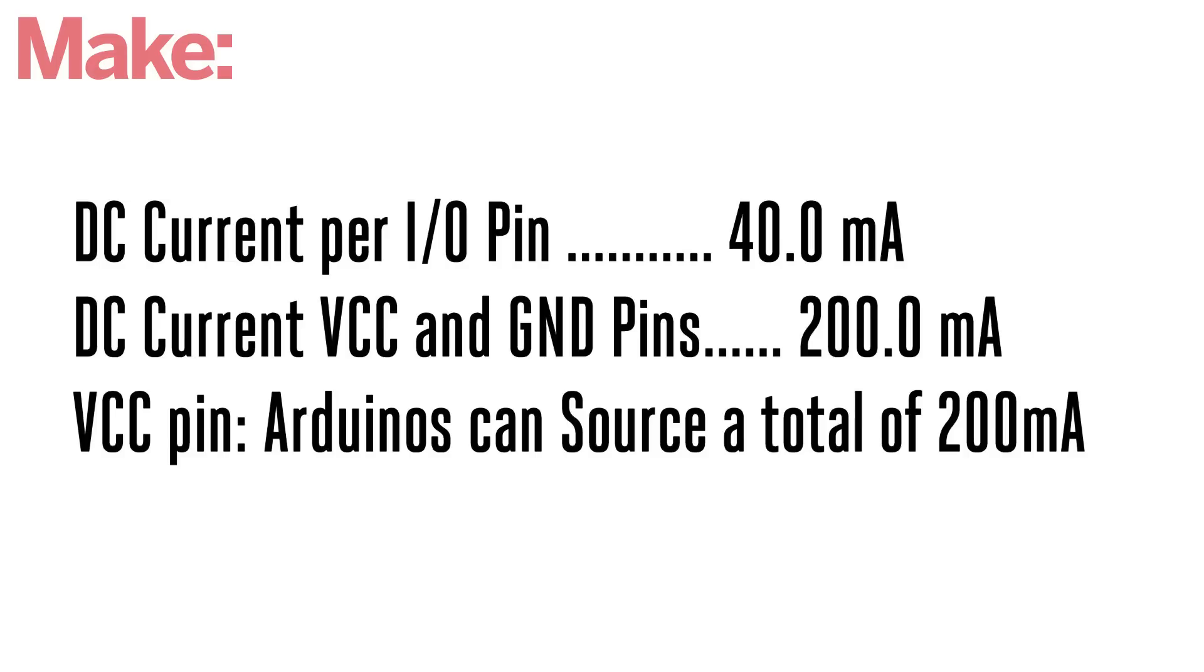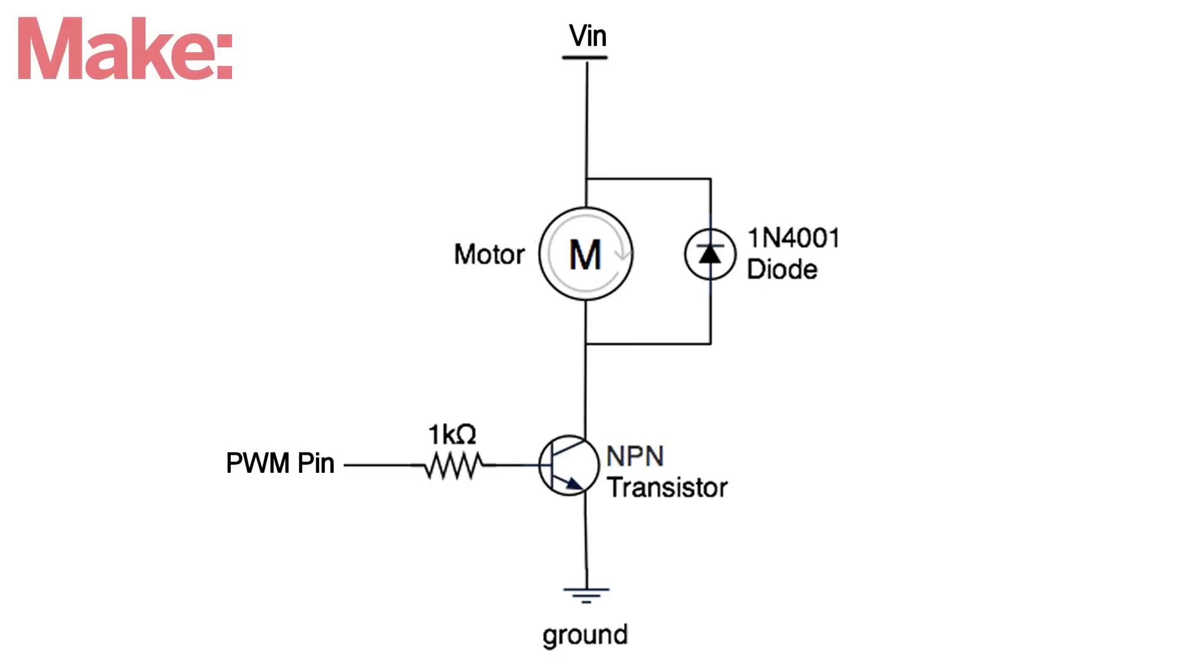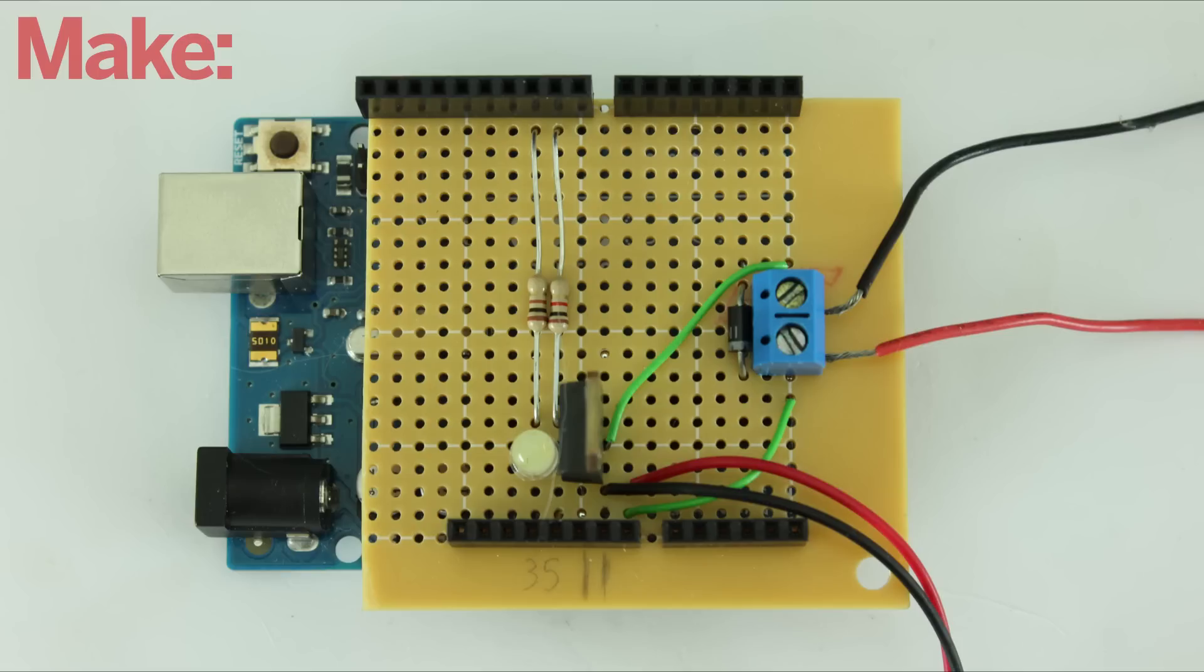Unfortunately, the digital pins have a max output of 40 milliamps, and this isn't enough to power most motors. So, we need to use an external power source and a transistor switching circuit. This is similar to the transistor circuit that we used for the relay shield, but with two changes.